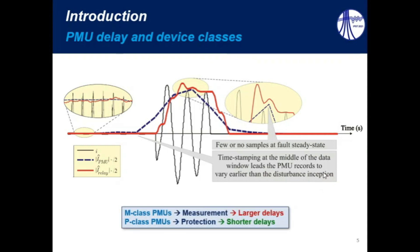Regarding these PMUs, it is also important to notice that there are two classes. Firstly, we have here the M-class PMUs, which are mainly used in measurement applications, in such a way that they are more accurate, and thereby they have larger delays.